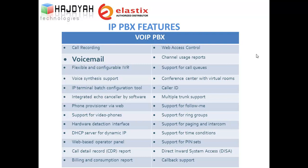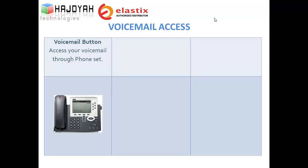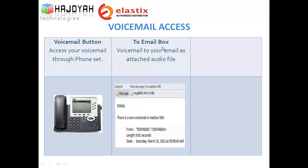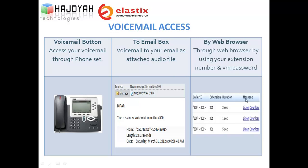Voicemail options. Elastic has collected all voicemail options and features available on other telephony systems. In Elastic, you can get your voicemail in three different ways. First, you can press the voicemail button on your phone set. Second, you can configure your voicemail to forward it to your email as an attached audio file. Third, you can open your web browser and enter your extension number and password to access all your voicemail.